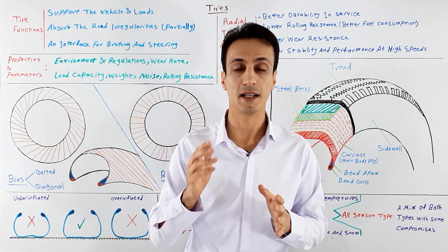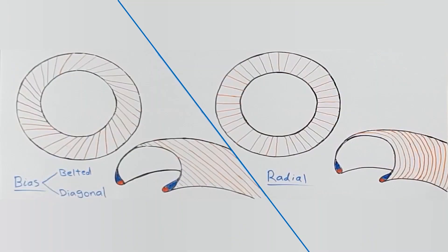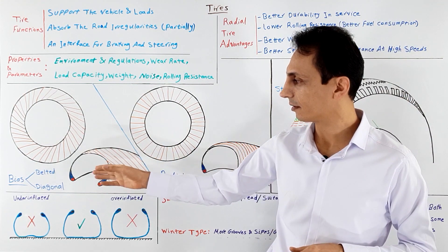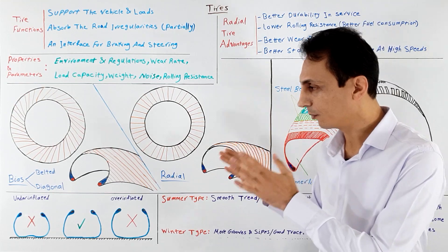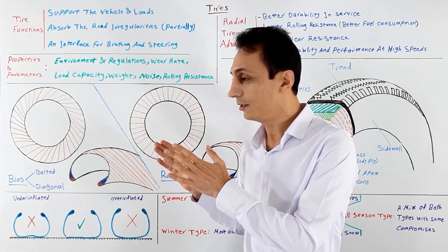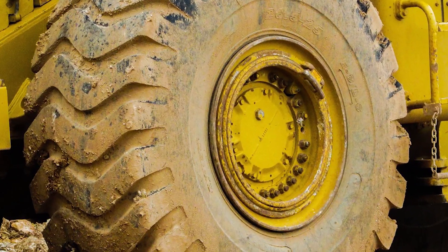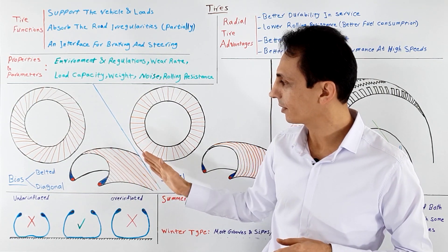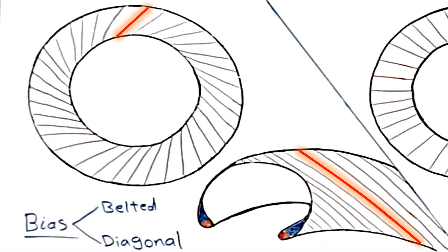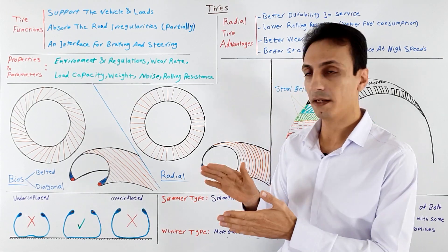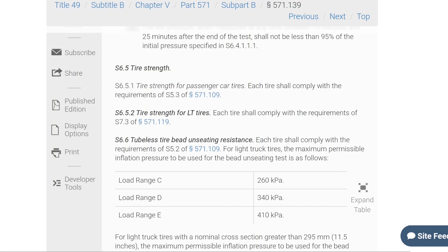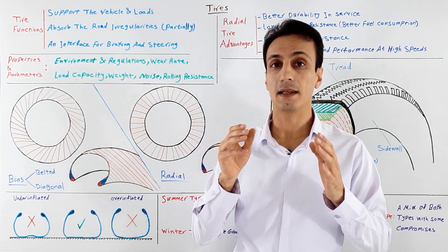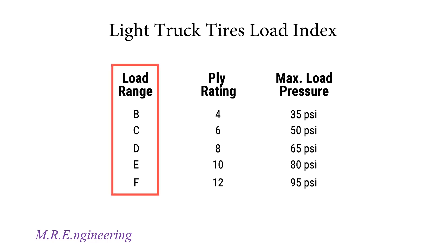There are two major tire types in the market: bias and radial. Bias types are older and are divided into two sub-types: belted and diagonal. I won't go into detail about bias types here because they are mostly used on trucks, buses, road and farm machineries, and aircraft. These tires have cords in their carcass — the main body ply — that are laid at bias or diagonal angles. Viewed from the side, these cords go from bead to bead, and there may be many layers of them to give the tire its desired strength, presented by load range, load index, or ply rating. Note that ply rating is just an index number to represent the strength of the tire and is not necessarily the actual number of cord layers.